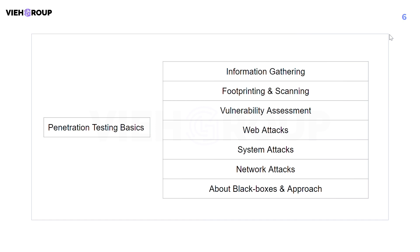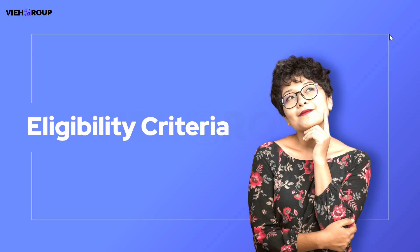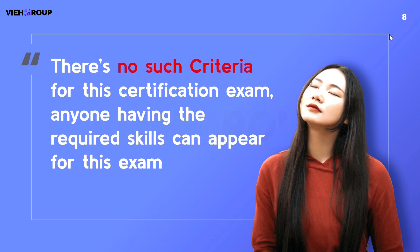The course will also teach you how to approach a target. You get a full hands-on experience while learning all the modules, with slides and videos to demonstrate topics and labs to perform. There is no eligibility criteria for this certification exam — if you have the skills, just purchase the voucher and give the exam. The whole exam is going to be proctored by the eLearn Security team.